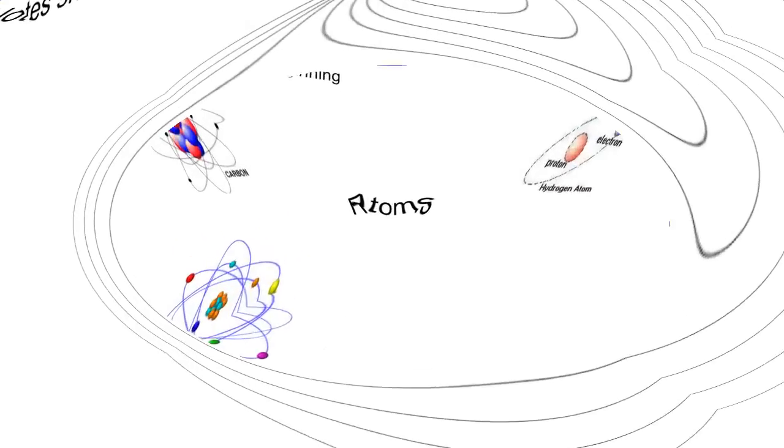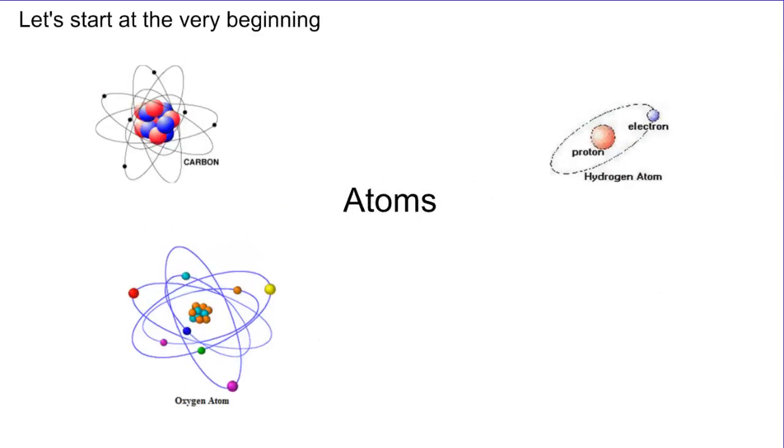As we start at the very beginning, we understand that all living things are made of matter and matter is made of atoms. You can see some pictures of common atoms that we see in living things. We talked about atoms in one of our previous videos and the idea of being organic is based around the atom of carbon.